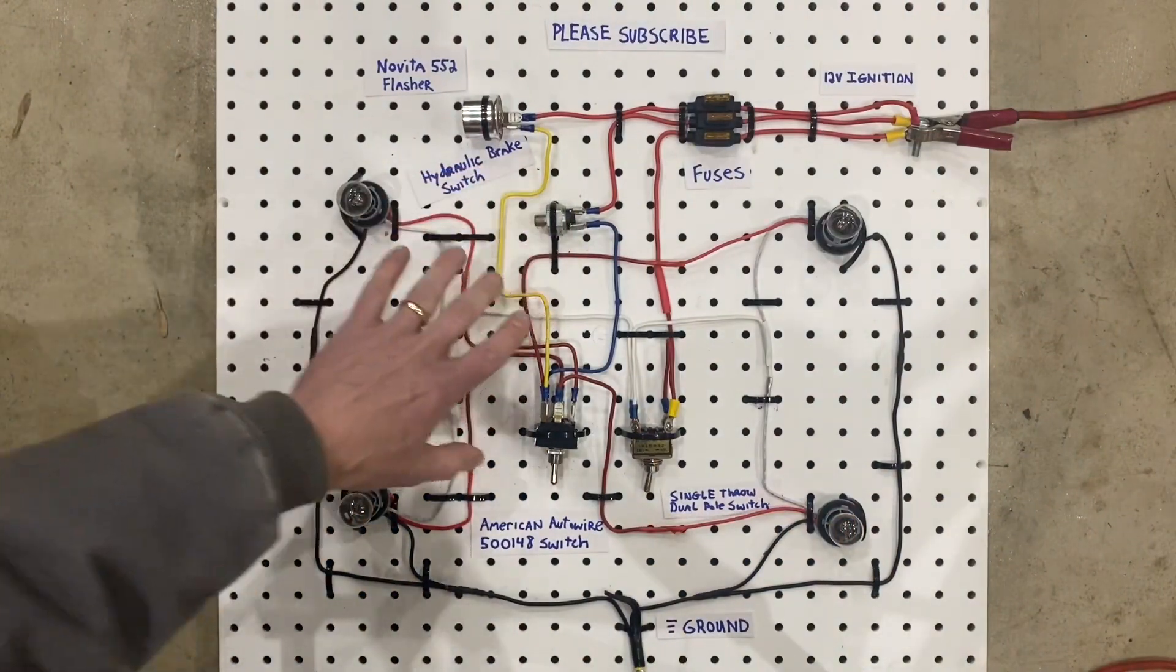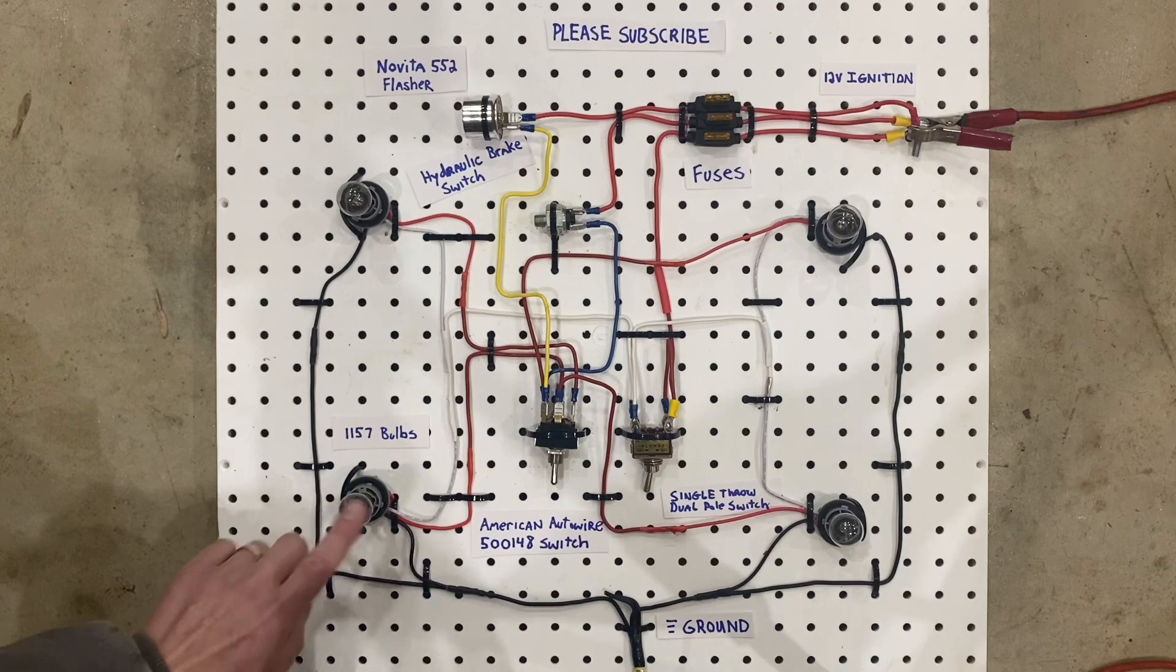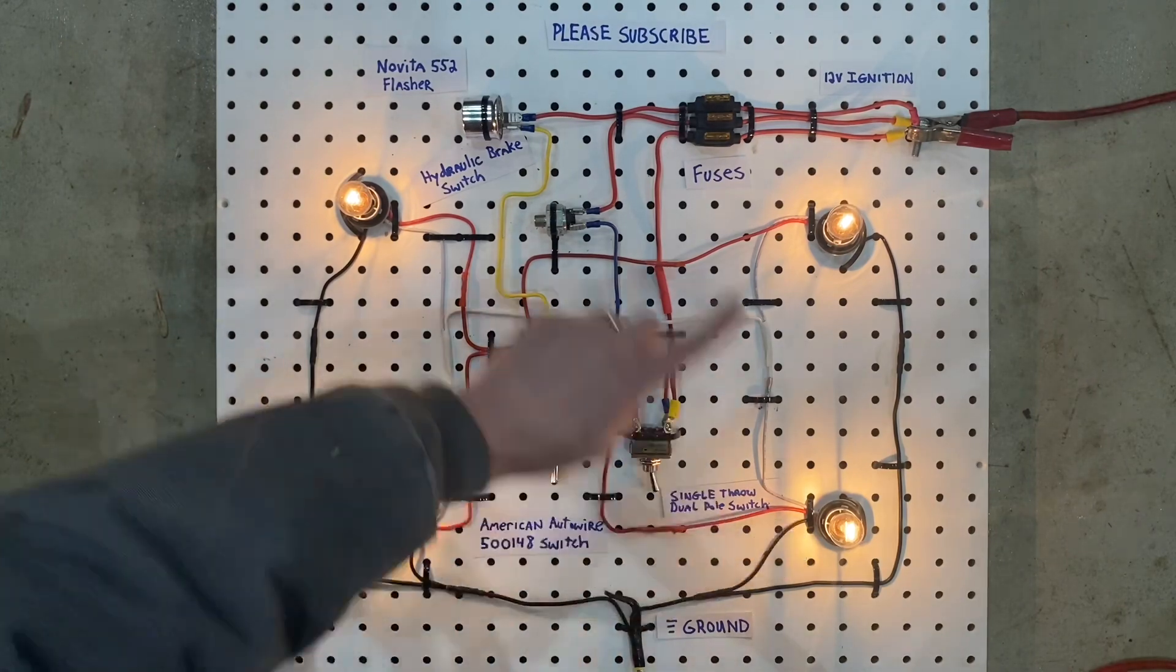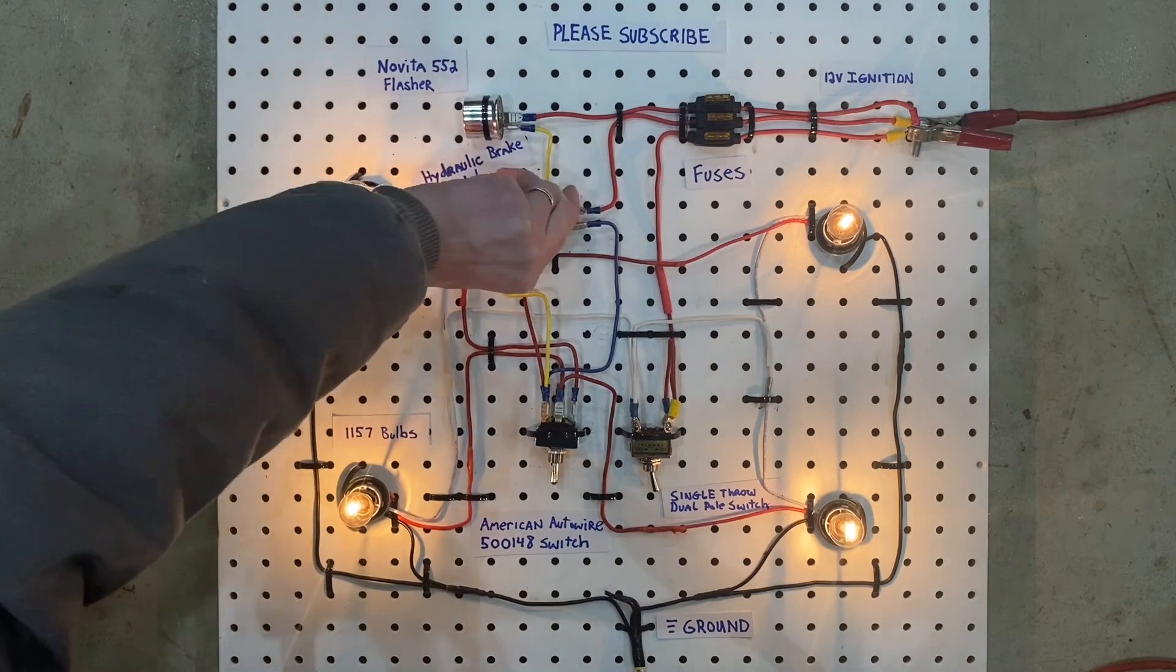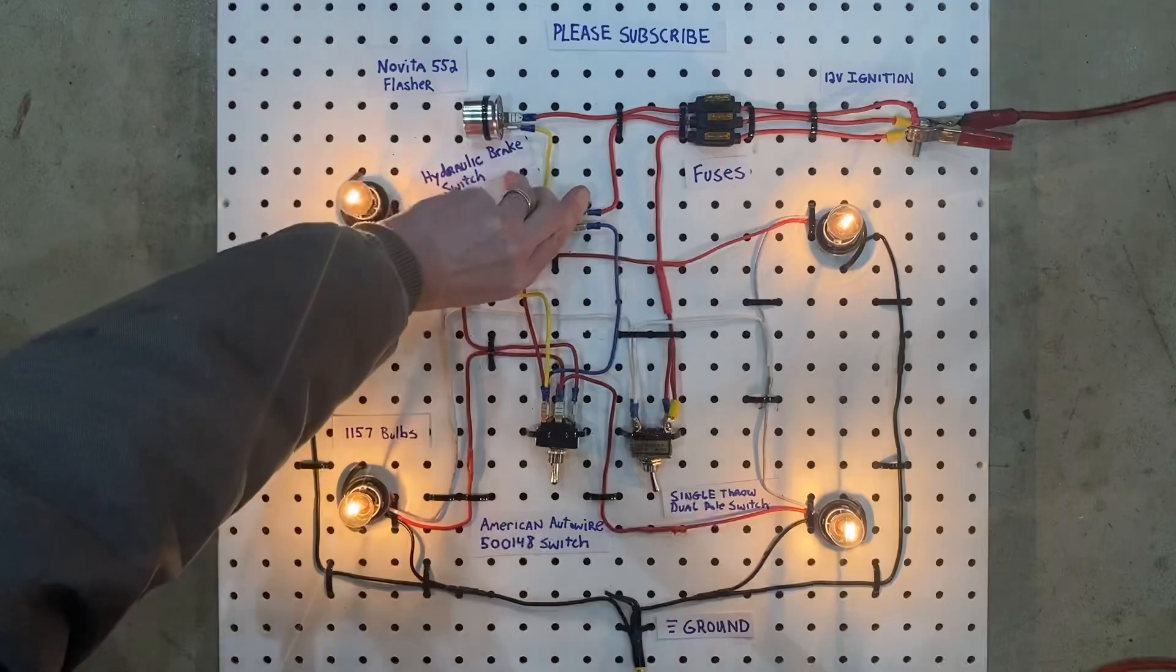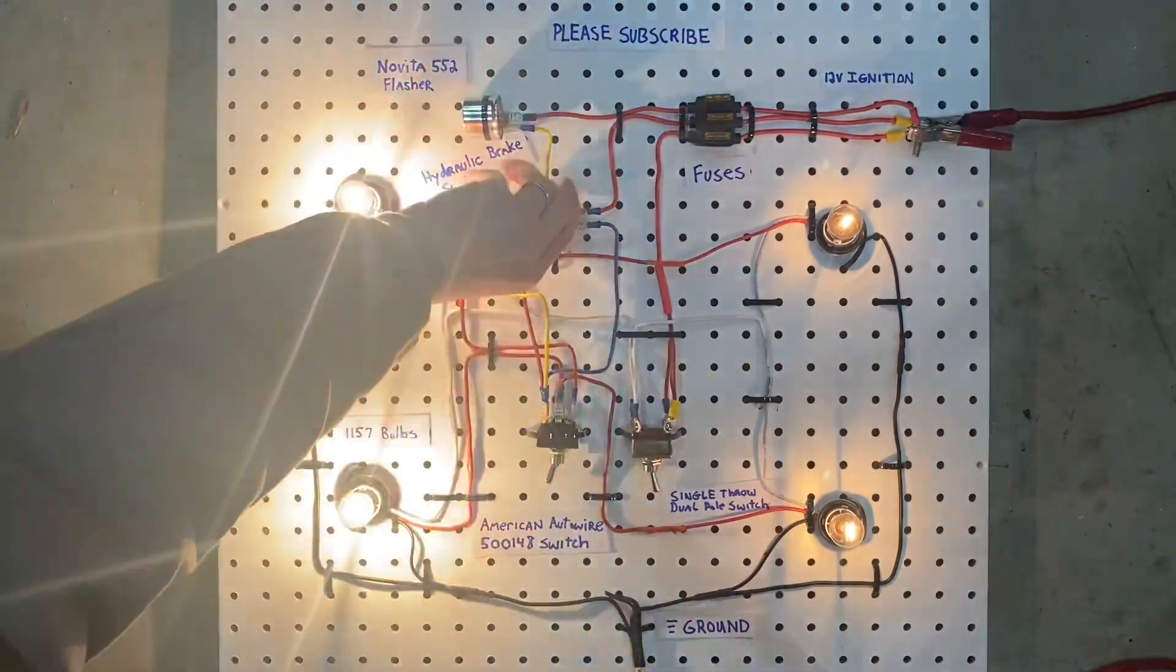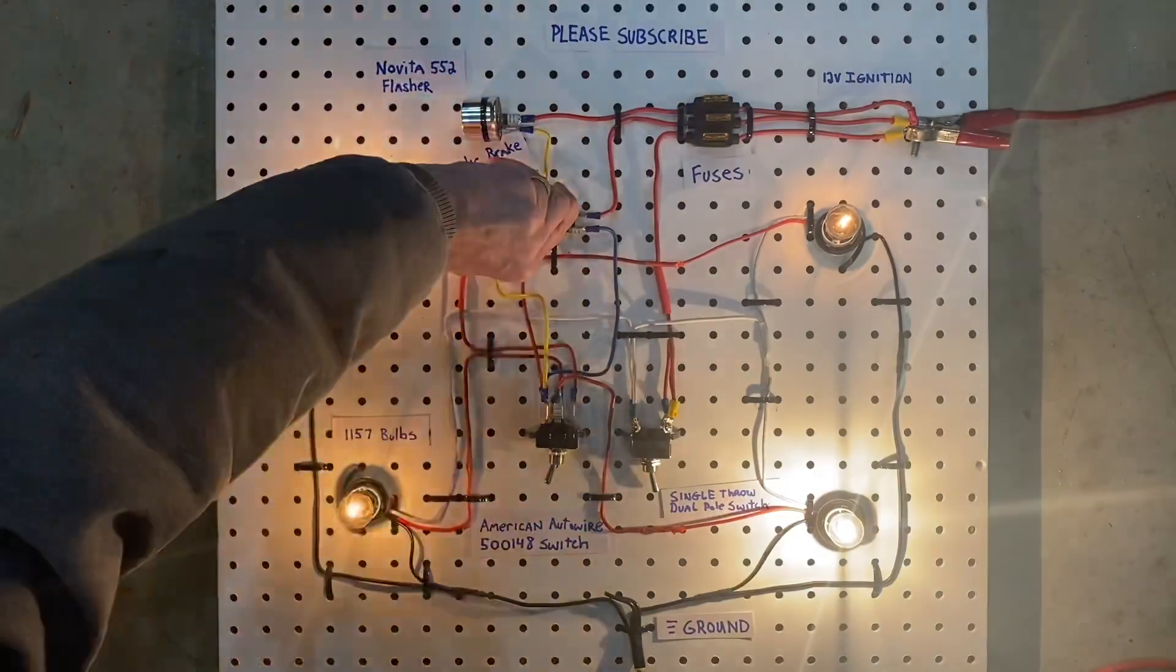Now, the brake lights and the turn signal lights are using one of the filaments in these two rear bulbs. The parking lights are using the opposite filaments. So as you'll see, we have the parking lights on. And if we turn on the brakes, it uses the second filament in each of the bulbs. And then if we turn on the turn signals, we have the turn signal on, the parking light on, and now we have the brake on.